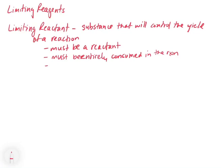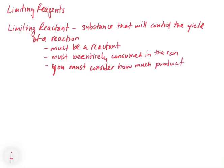One thing to keep in mind is that the limiting reagent is not necessarily the reactant with the smallest mass. A lot of students look at the reactants and say this one has the least mass so it must limit the reaction. That's not necessarily true, because you have to think about how many moles of each thing you have and consider what the molecular weights are. Something with a very high molecular weight would require more. It's not just about how much you have — it's about how much product you can make based on the amount that you have. You must consider how much product each reactant makes.